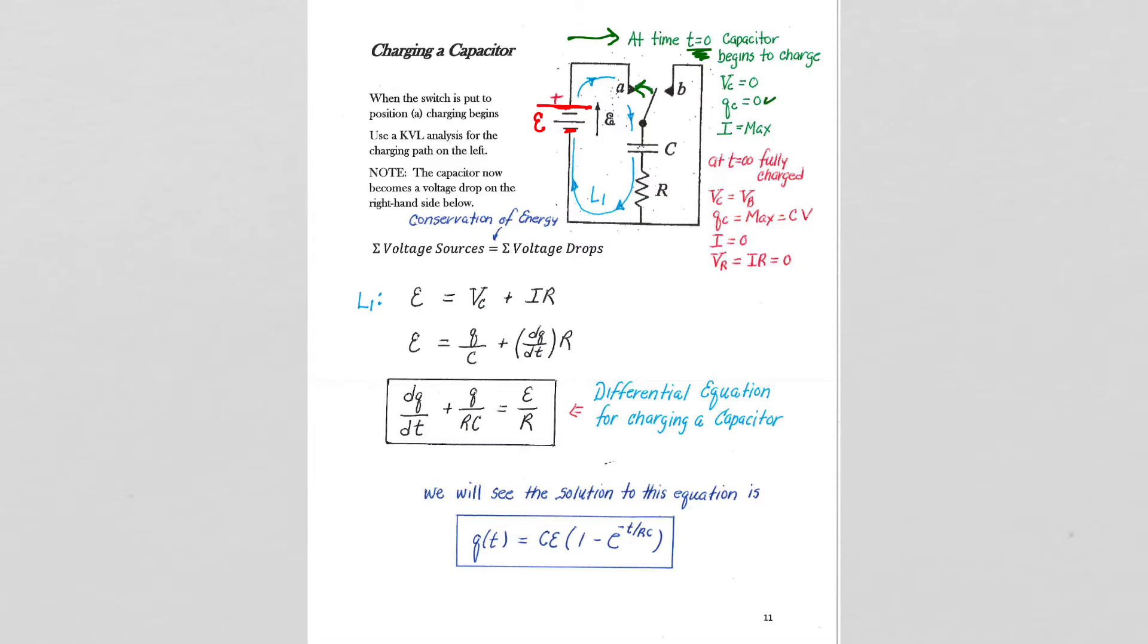If there's no charge on the capacitor, then there's no voltage across the capacitor, right? Because q equals CV. And there's no back voltage because the voltage on the capacitor provides the impedance to the flow of charge.